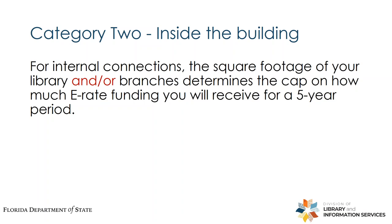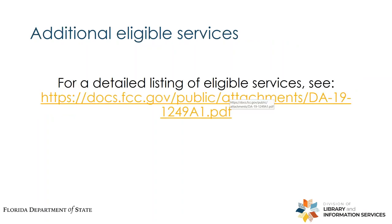Category 2 can be used to fund connections to security services — say cameras — but not the security equipment itself. For instance, if you were setting up Wi-Fi-enabled cameras in your building, E-Rate would cover the Wi-Fi connection that those run on, but not the cameras themselves. Every year USAC puts out a new list of eligible services, and I have a link there to the most current list.